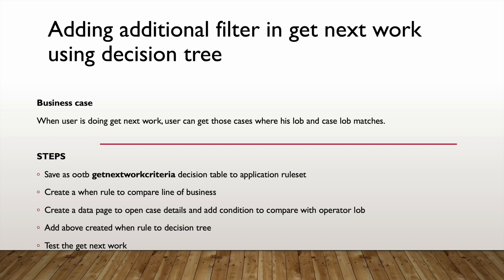You might ask why we can't do this directly in the database using the Get Next Work list view. Yes, that can be done, but sometimes the attribute we want to compare is not exposed in the assignment table or not available there at all. In such cases, we use this decision tree approach. For our use case, when creating a case we stamp the case LOB, and when the user does Get Next Work, they can only get cases where their LOB matches the case LOB.